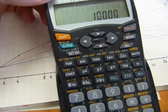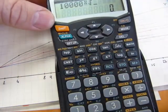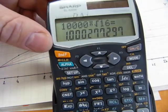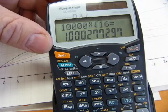10,000, second function, root button, 16, there. 1.00 something something. It's more than 1. Actually, in fact, all of these lines, all of these curves...